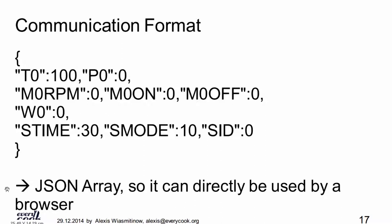For communication we use JSON — it's very easy to use, and we've built it in a JSON array designed to be well-extensible. M0 is the first temperature sensor, M0 is the pressure sensor, M0 is the first motor. So if you want to build devices that have M2, you can extend it that way.